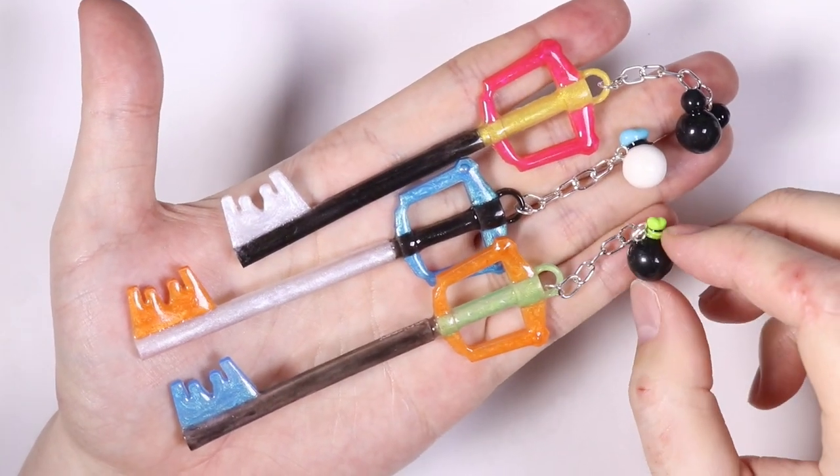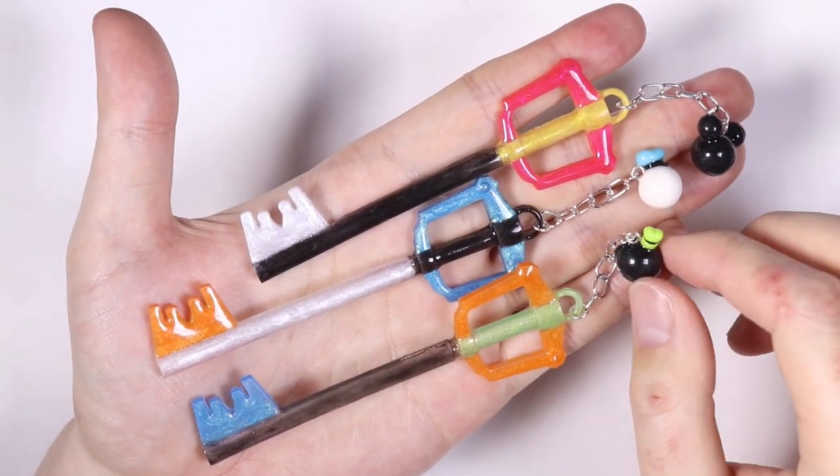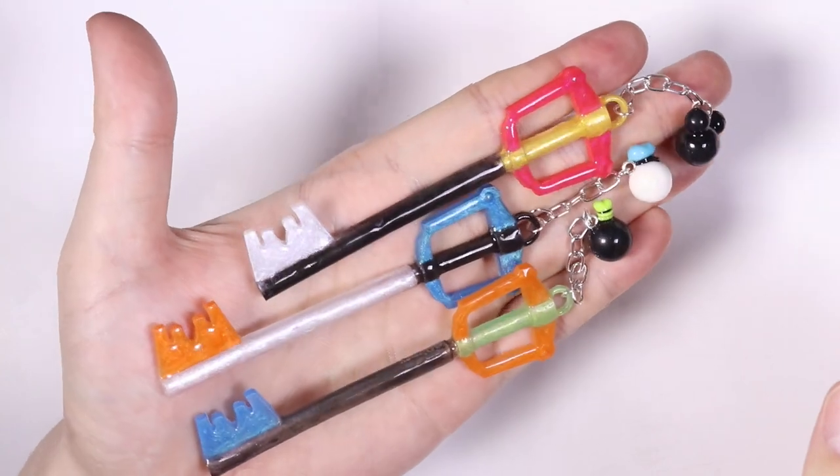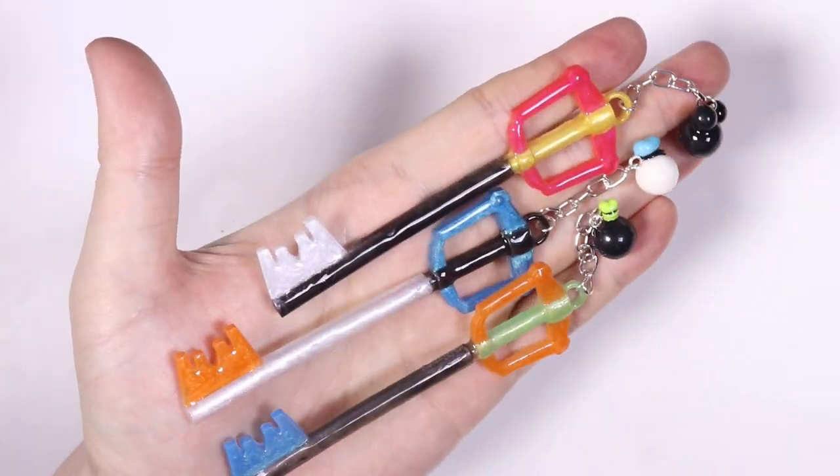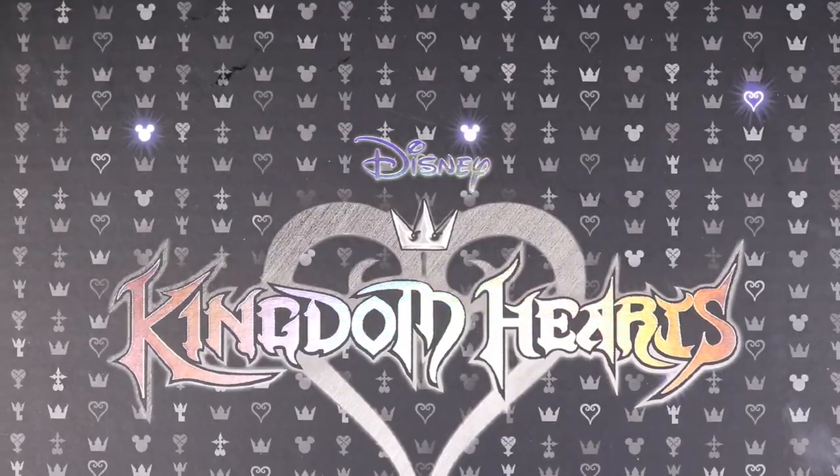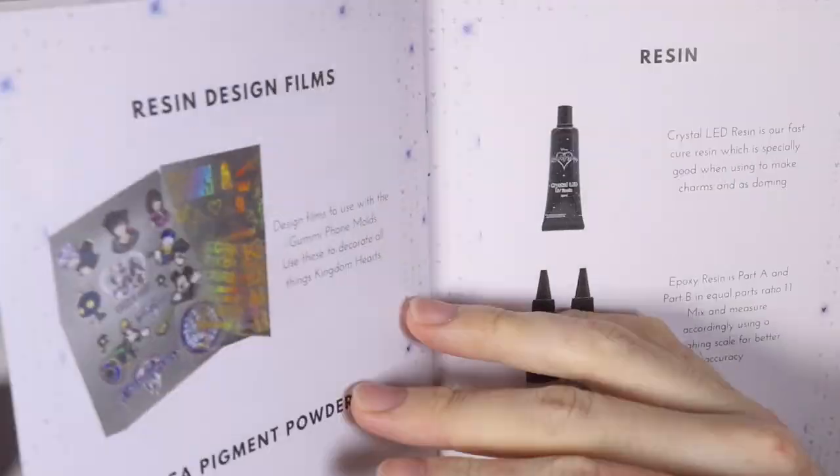Hey everyone, this is Alex or PolyMomoT and today I have a video showing I make these cute little Disney keyblades out of polymer clay and resin. I am using my materials from my Sophie and Toffee box so you can check out everything that was included in the box.